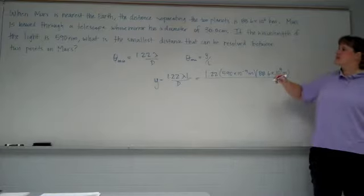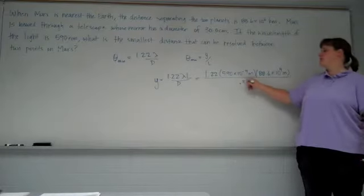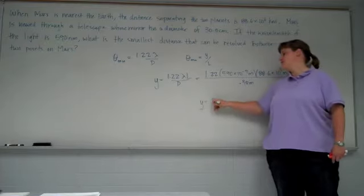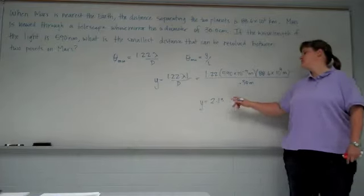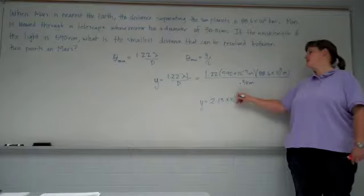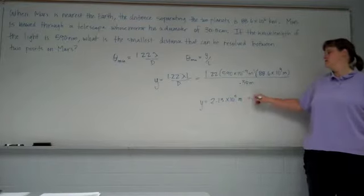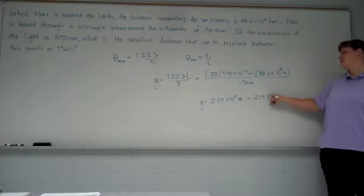D is the diameter of our mirror, which would be 0.3 meters. So plugging that all through, we get 2.13 times 10 to the fifth meters, which is 213 kilometers.